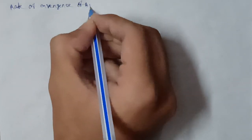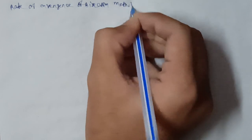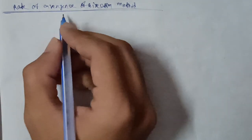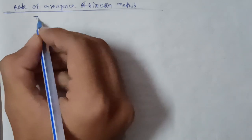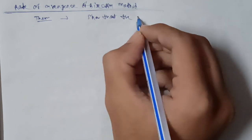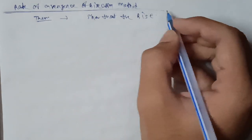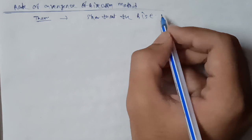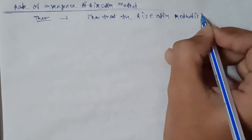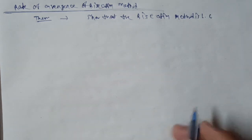Rate of convergence of bisection method. We have the numerical rate of convergence of the bisection method. First, regularity, and second, bisection. The theorem states that the rate of convergence of the bisection method is linearly convergent.